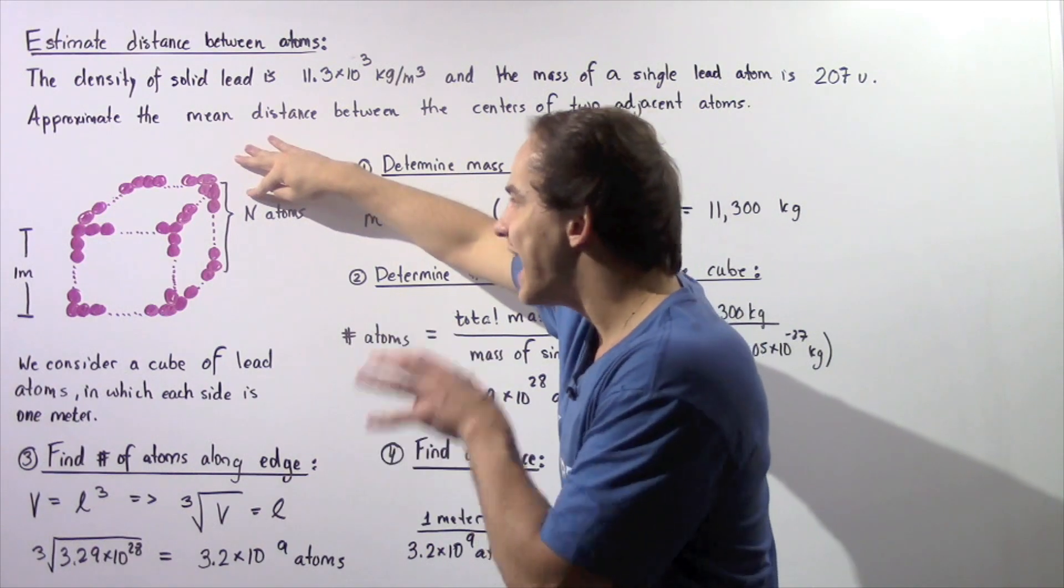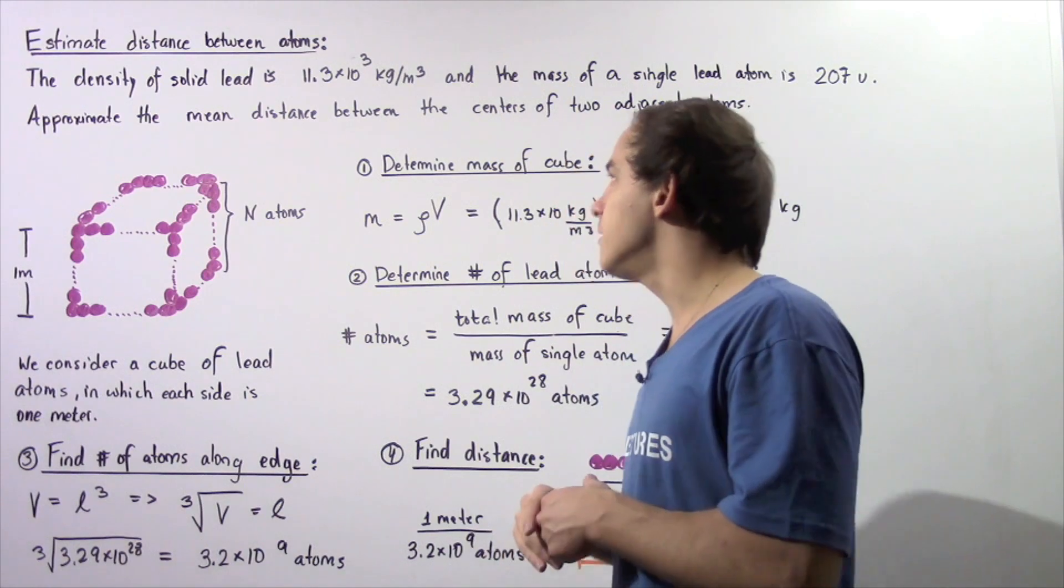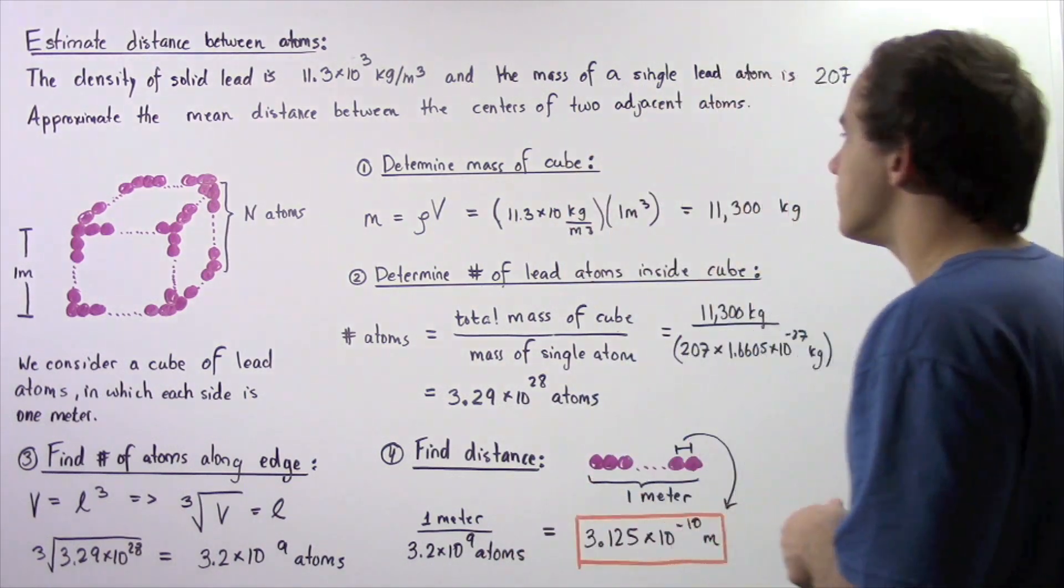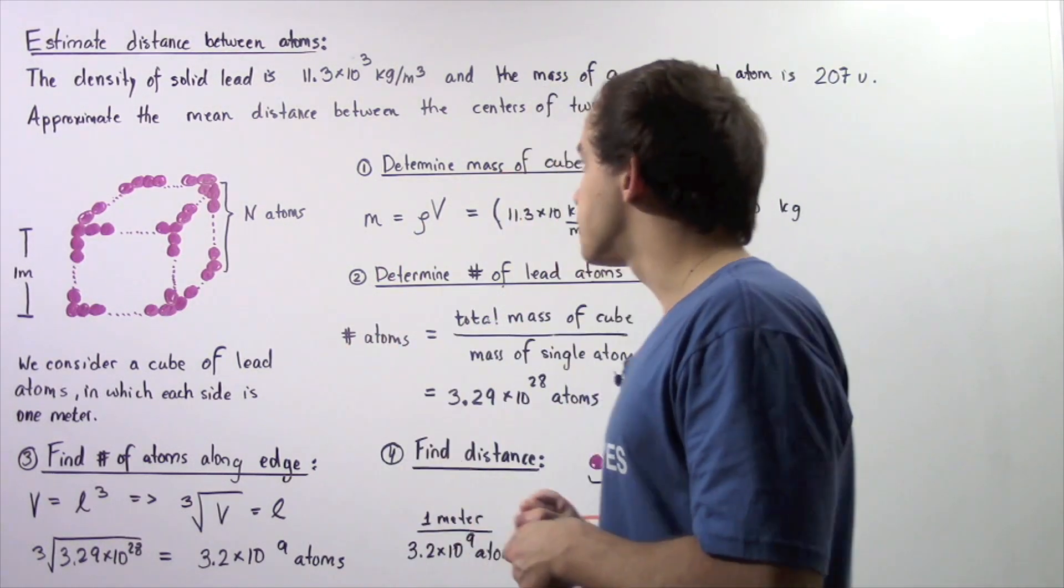We're going to need to calculate this number n to find the distance between the centers of any two adjacent lead atoms. So we break down our problem into four steps.